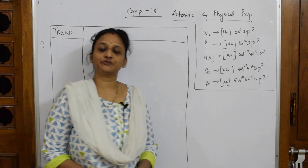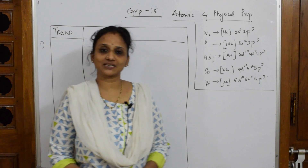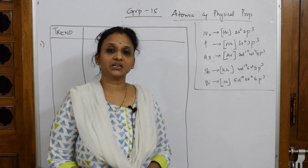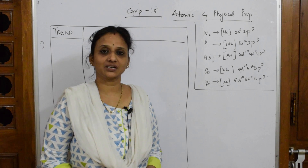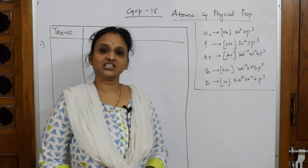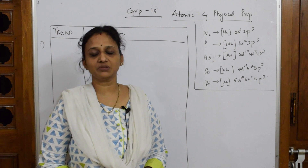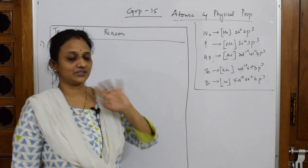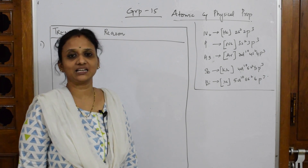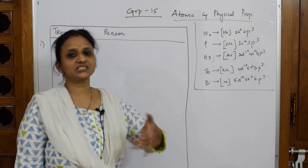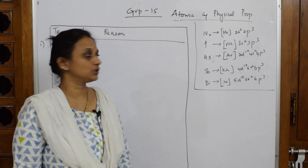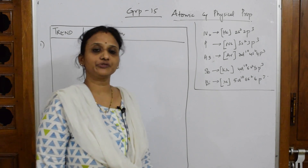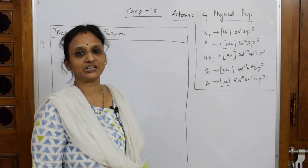Let's come back and start with your first trends — the general trends in physical properties as well as atomic properties, basically atomic radii and ionic radii of your group 15 elements. Let's start with p-block elements with the first trends. Whenever we speak about general trends, reasoning questions are directly asked from this. In group 15, we have a combination — these are the set of elements.